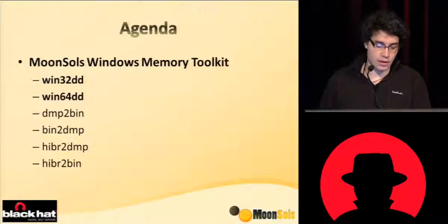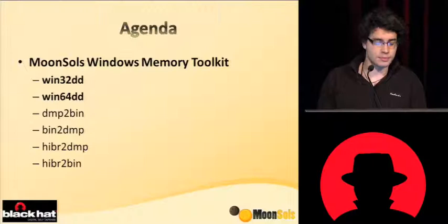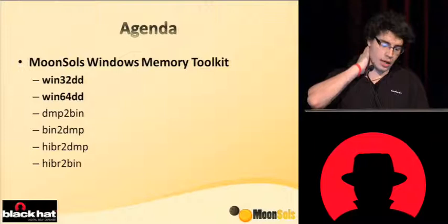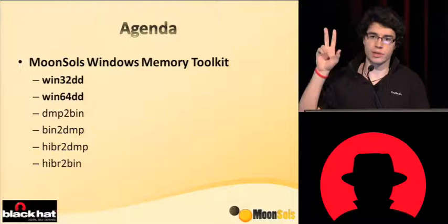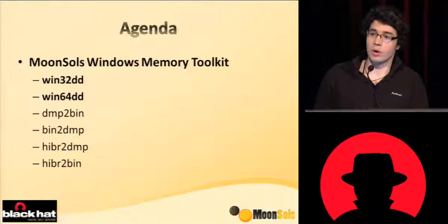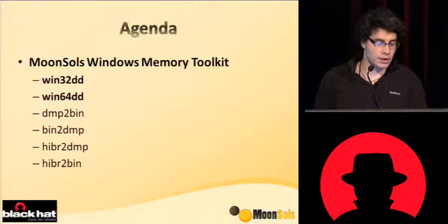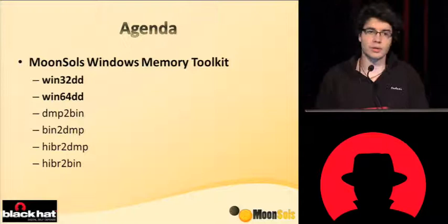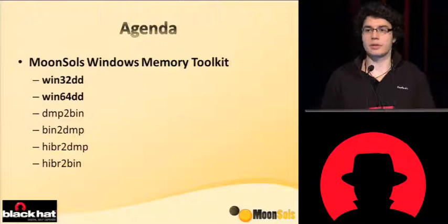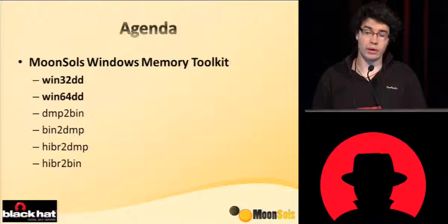The toolkit I am presenting is called the Windows Memory Toolkit. It contains various utilities including WinDD, a dump-to-bin tool to convert a Microsoft crash dump into a linear raw memory dump, and the ability to convert a raw dump into a Microsoft crash dump. There are also two tools for the Microsoft hibernation file: the first converts a hibernation file directly into a Microsoft crash dump, and the second — hibernation-bin — uncompresses the Windows hibernation file.